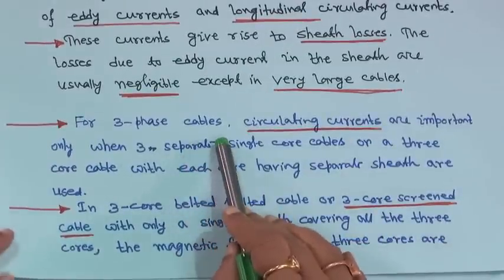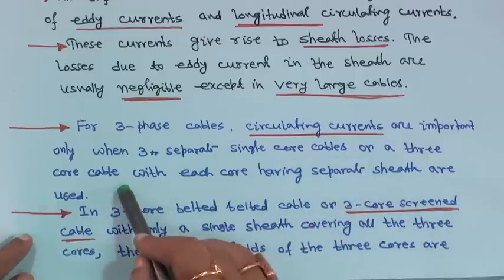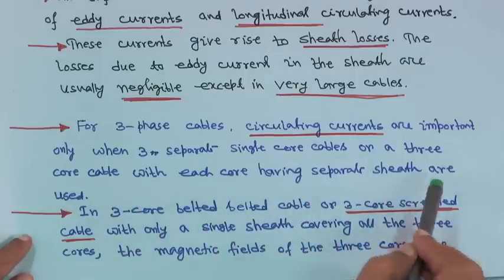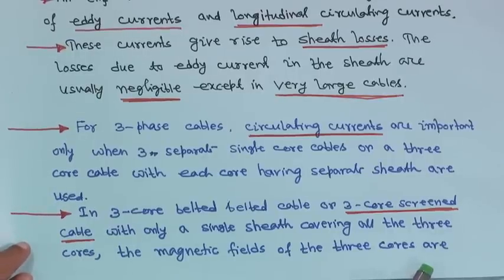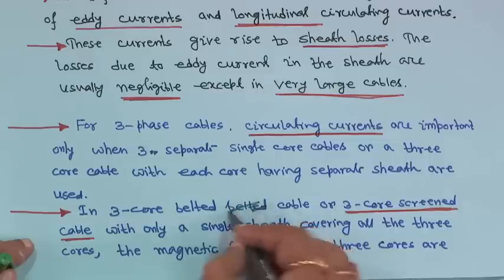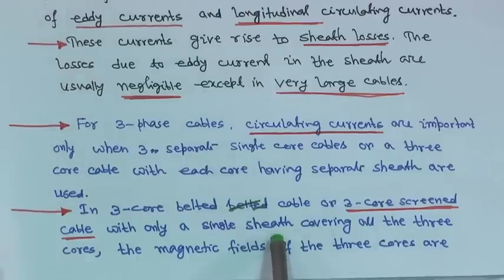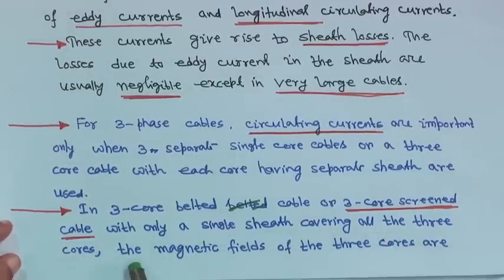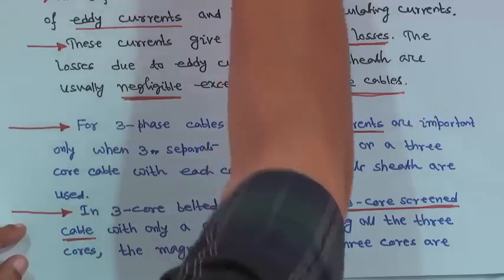For 3-phase cables, circulating currents are important only when 3 separate single core cables or a 3-core cable with each core having a separate sheath are used. In 3-core belted cables or a 3-core screen cable with only a single sheath carrying all 3 cores, the magnetic fields of the 3 cores are partially mutually compensated and the circulating currents are reduced.